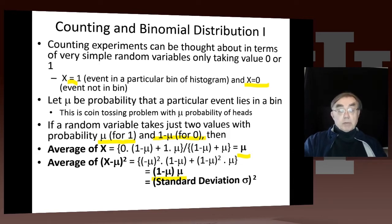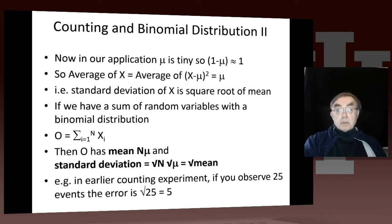For μ small, which has been the counting case we've been doing, 1 minus μ is approximately 1. Standard deviation squared is μ, so sigma is the square root of μ. But the more general result applies whether or not μ is small. In our case, the chance of any one event lying in any one bin is small, so 1 minus μ is essentially 1, and we get the usual result that the standard deviation is the square root of the average.